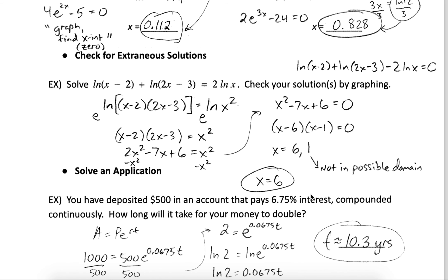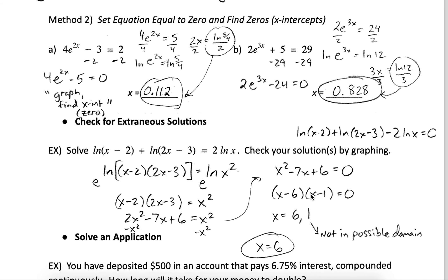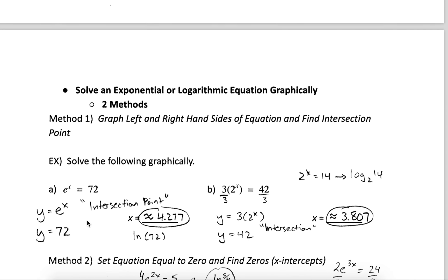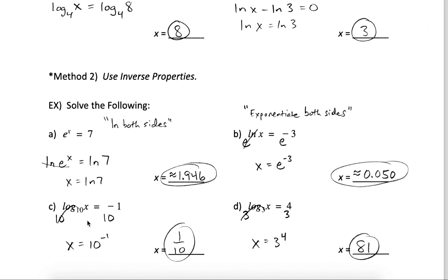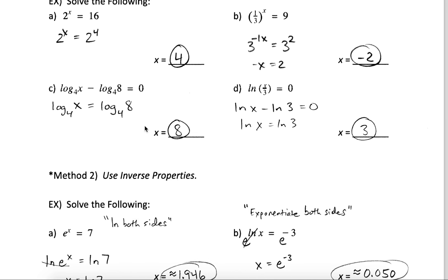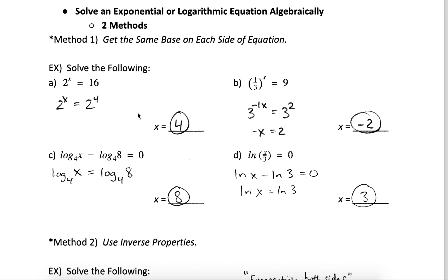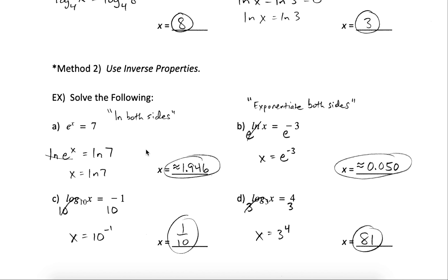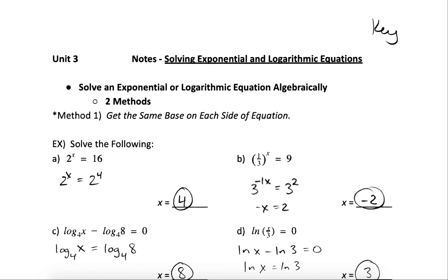So to summarize: solving exponential or log equations can be done graphically by graphing both sides and finding the intersection point, or by setting the equation equal to zero and finding x-intercepts. For simpler equations, use the same base method or inverse properties — using logs to cancel exponents and exponential functions to cancel logs. Good luck practicing; it's an important skill.